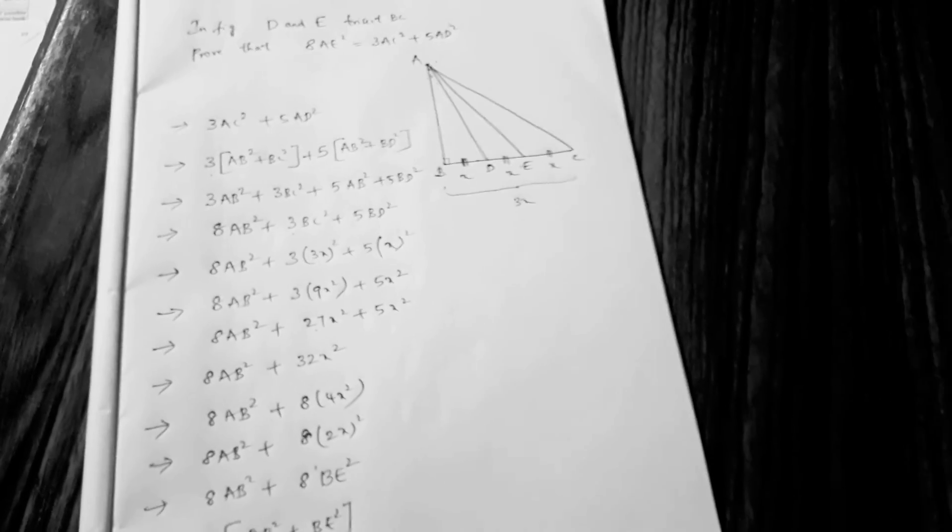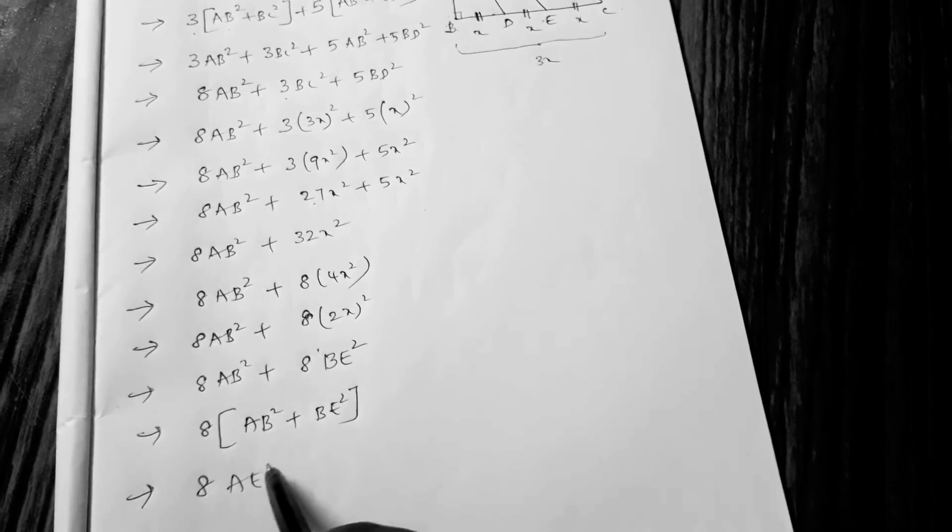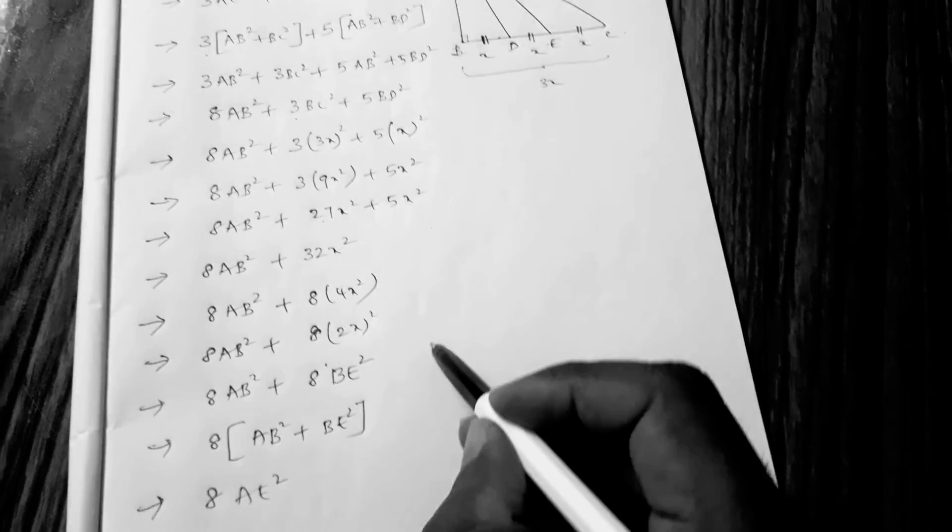So AB² plus BE² equals 8AE². Hence proved.